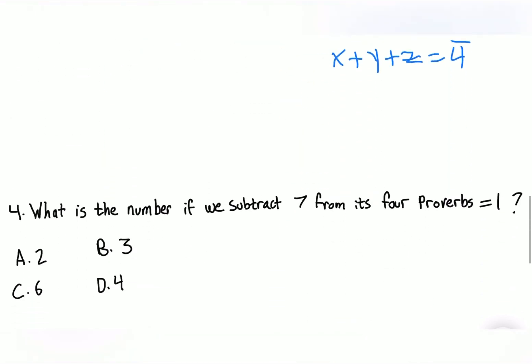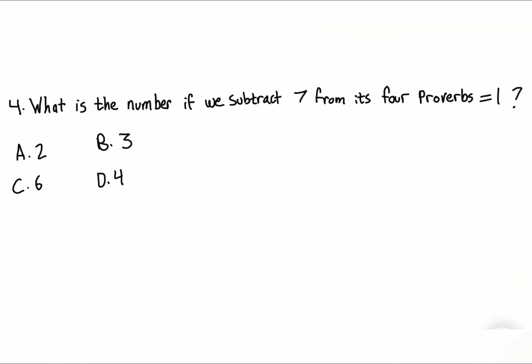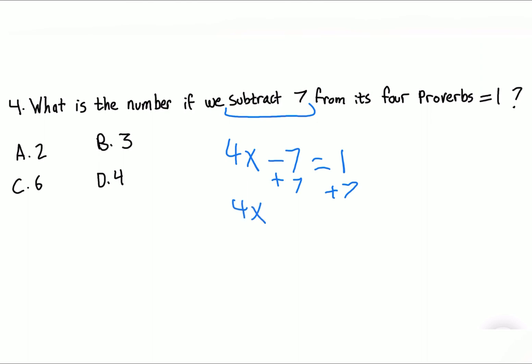Problem four: what is the number if subtracting seven from four times it equals one? This is simple algebra. Write it as 4x − 7 = 1, so 4x = 8, and x = 2. The answer is A. Don't be tricked — just write it out as an equation.